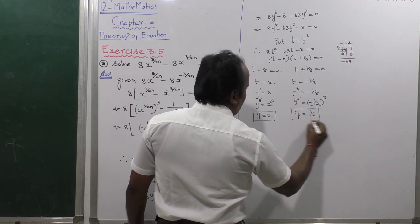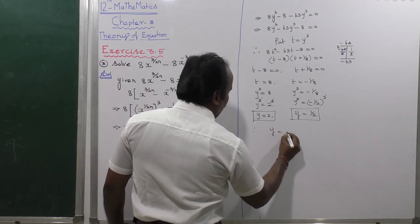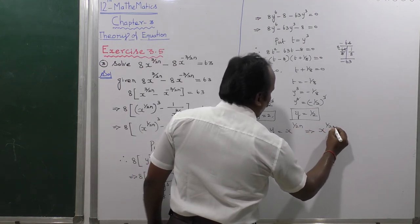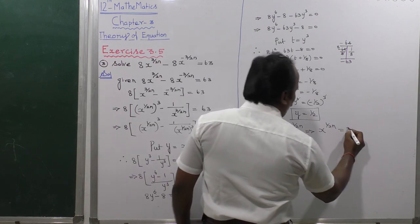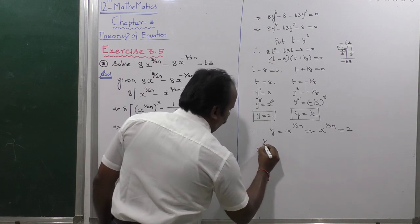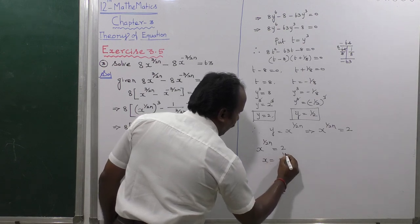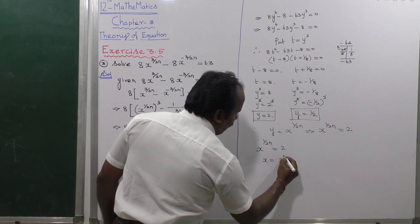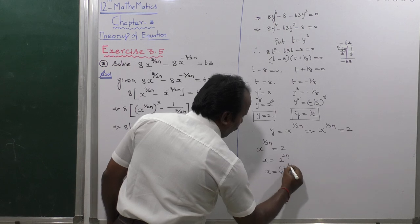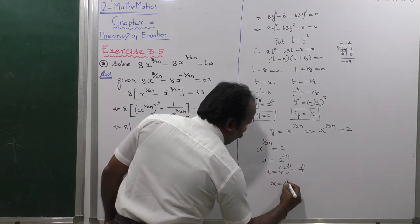Finding the values of x: since y equals x power 1 by 2n, for y equals 2, x power 1 by 2n equals 2. Therefore x equals 2 power 2n, which equals 4 power n. So the first answer is x equals 4 power n.